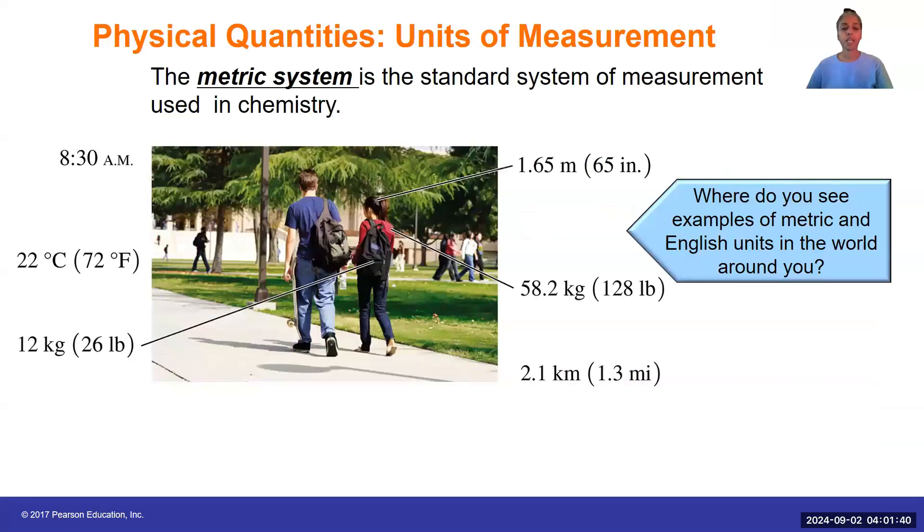So what is a physical quantity? It is essentially a unit of measurement. We generally use the metric system as a standard of measurement in chemistry. At times, we will use another system called the SI system, but we'll take a look at that in a moment.